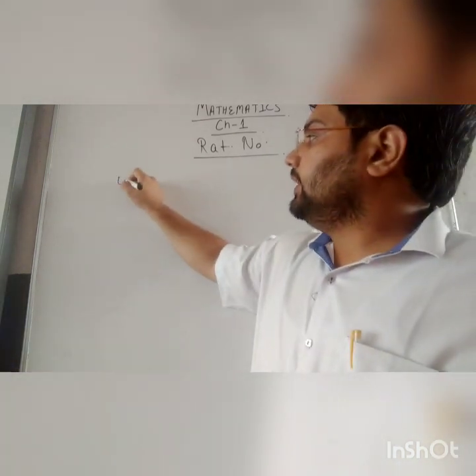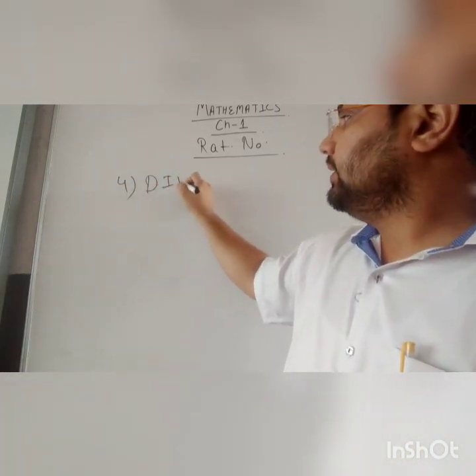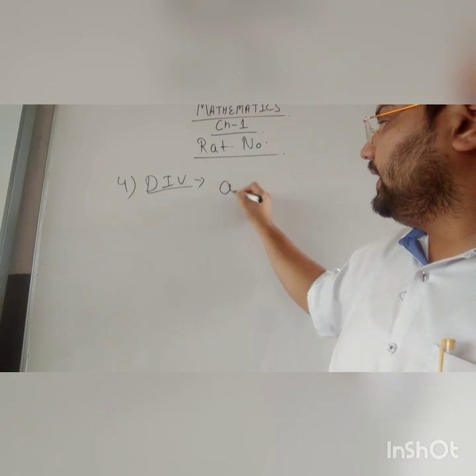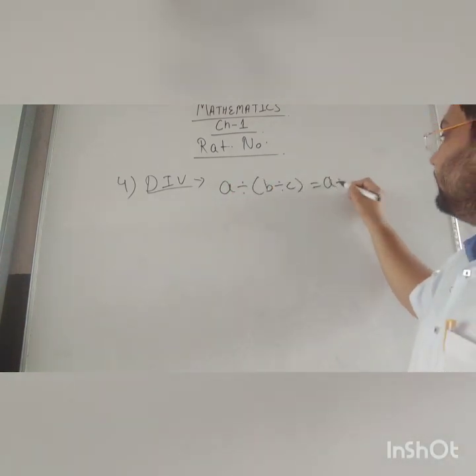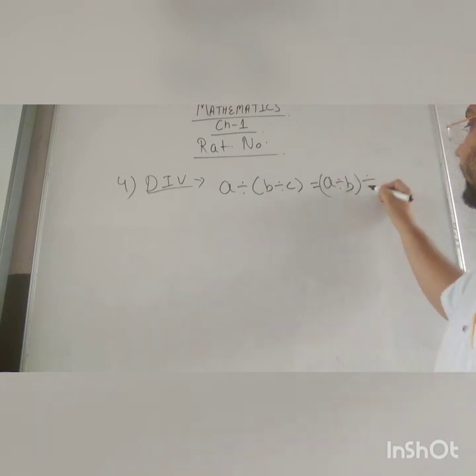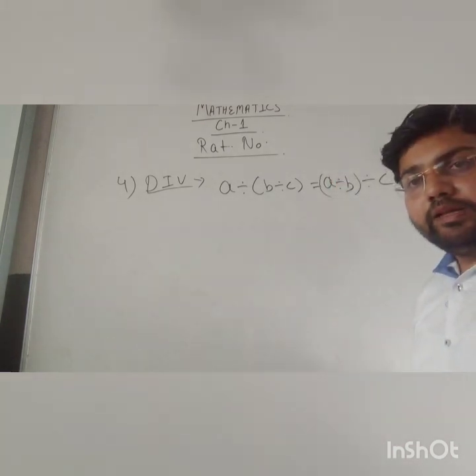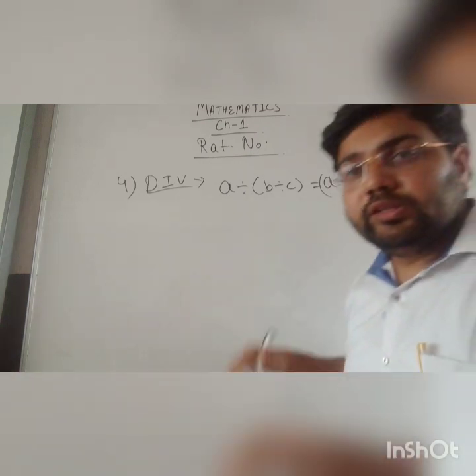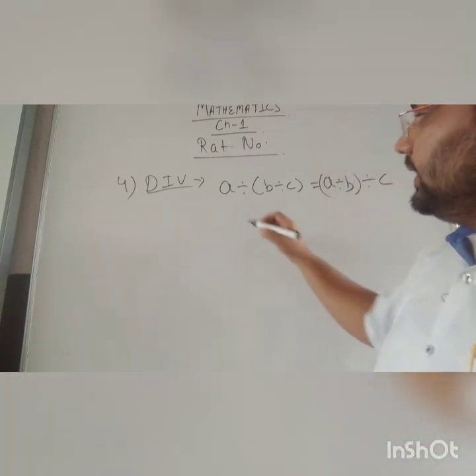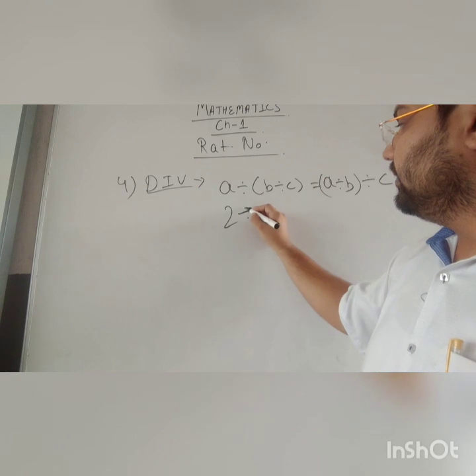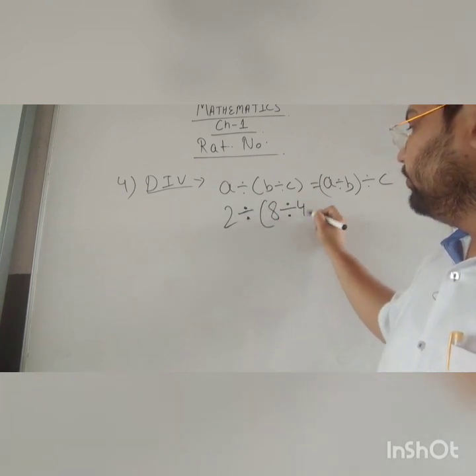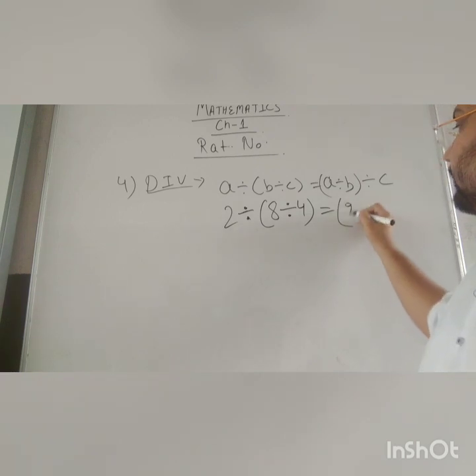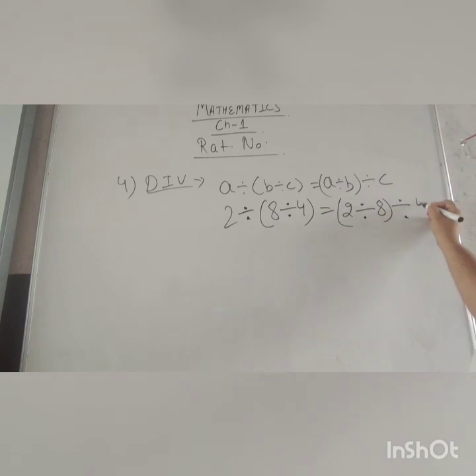Now the fourth one is division. What it says is a divide b divide c should be equal to a divide b divide c. If you put the values, this will not hold true. Suppose I am taking 2 divide 8 divide 4 equals 2 divide 8 divide 4.